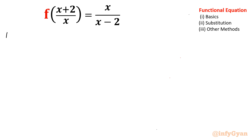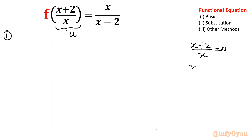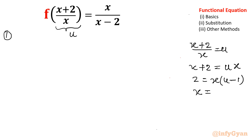I will solve by substitution. Let me consider x plus 2 over x equal to u. Cross multiplying: x plus 2 equals xu, so 2 equals x times u minus 1. This gives us x equals 2 over u minus 1.